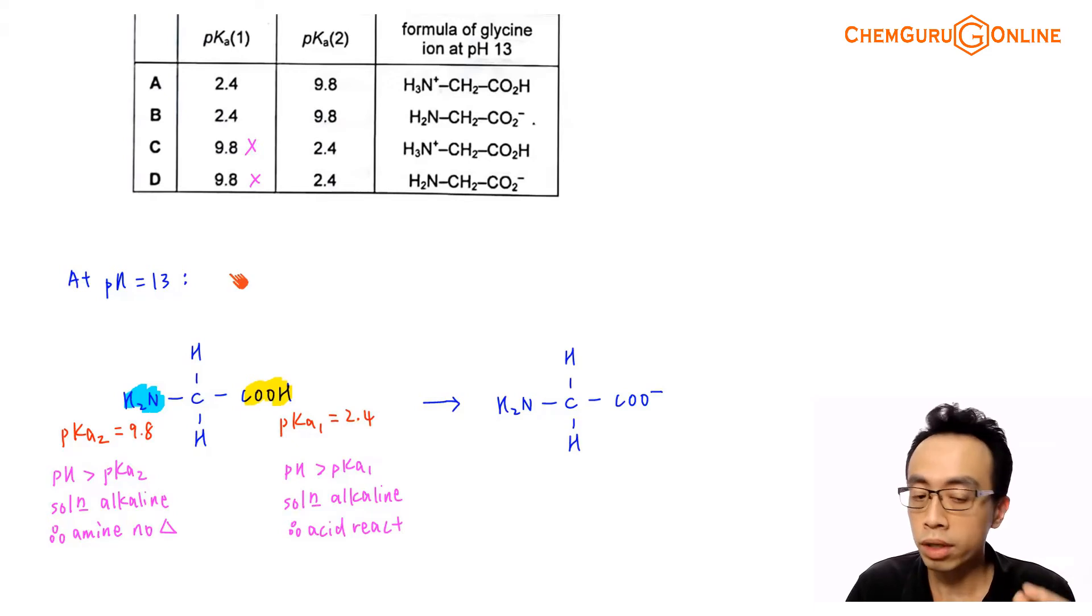I have to consider if I put this functional group into a solution at pH equals to 13, would this functional group think that the solution is acidic or alkaline with respect to itself? Then, depending on the functional group, it will respond accordingly. Let us run this two part by part.